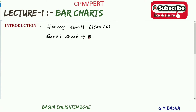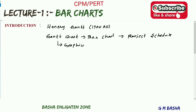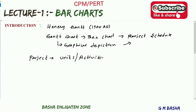A Gantt chart is a type of bar chart that illustrates a project schedule, commonly used for graphical depiction of a particular project schedule. A project generally consists of a number of well-definable, manageable units or activities that should be performed or completed in a definite sequence.